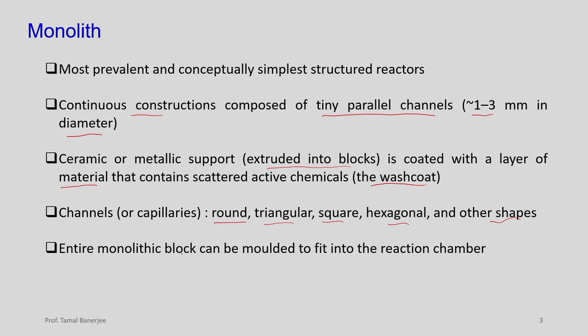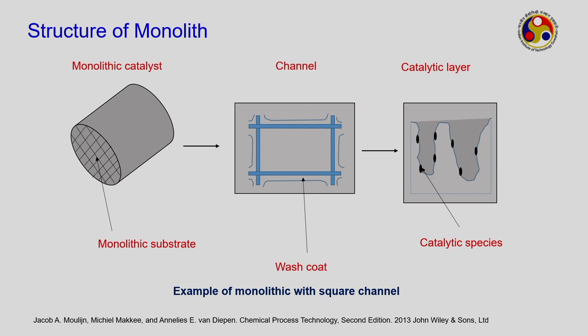The entire monolithic block can be moulded to fit into the reaction chamber. What you need to take care of is the channel size and the channel orientation - whether it is hexagonal, square, or triangular. If you see this typical example of a monolithic catalyst, this is the substrate. These are the channels going longitudinally across the entire shape. When this substrate is coated, that is called the wash coat.